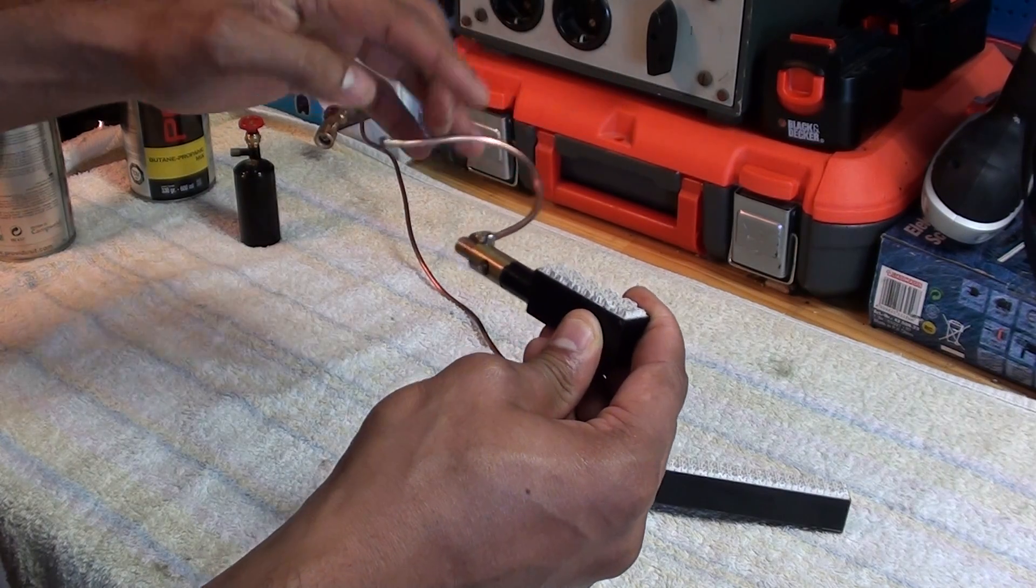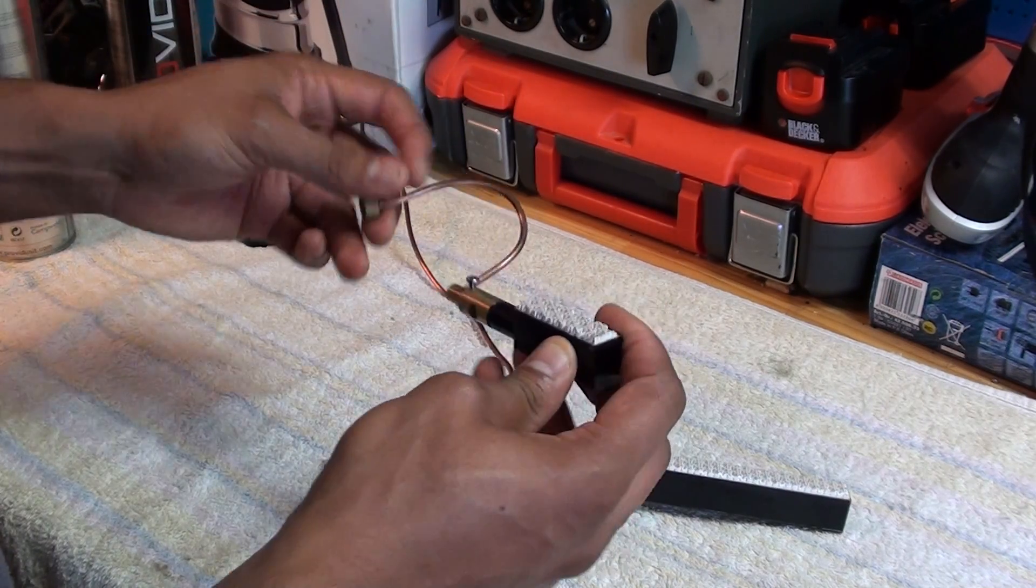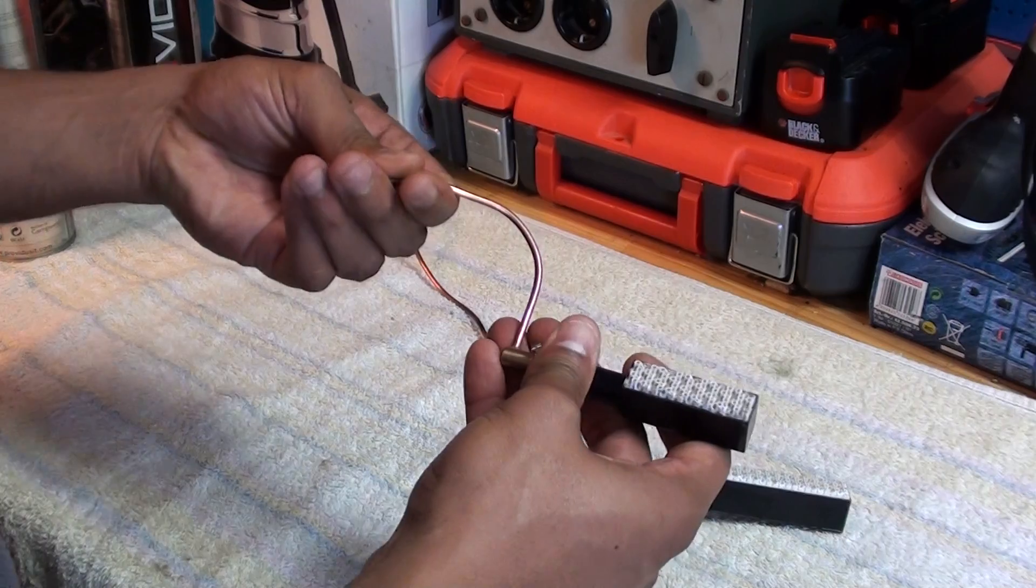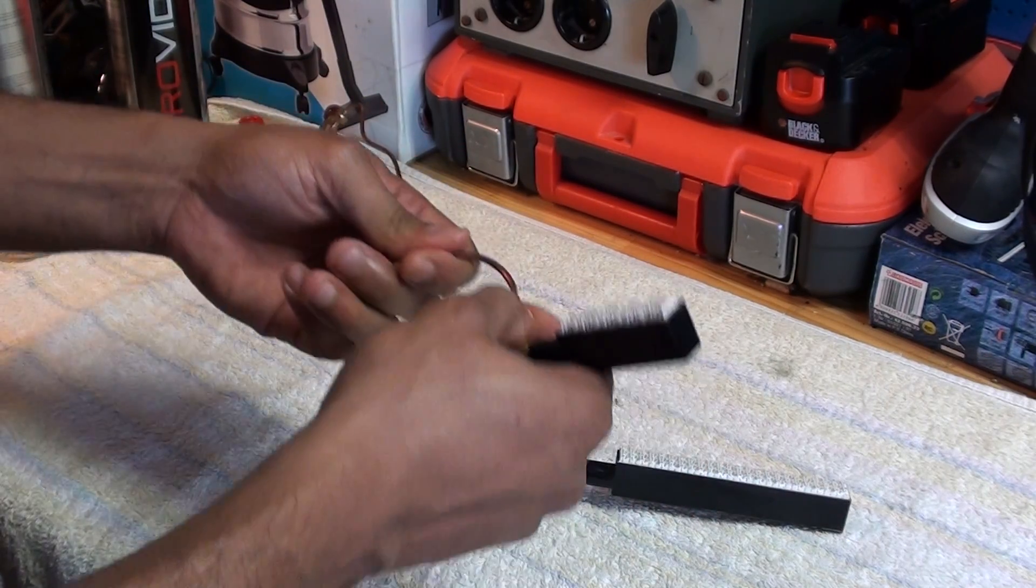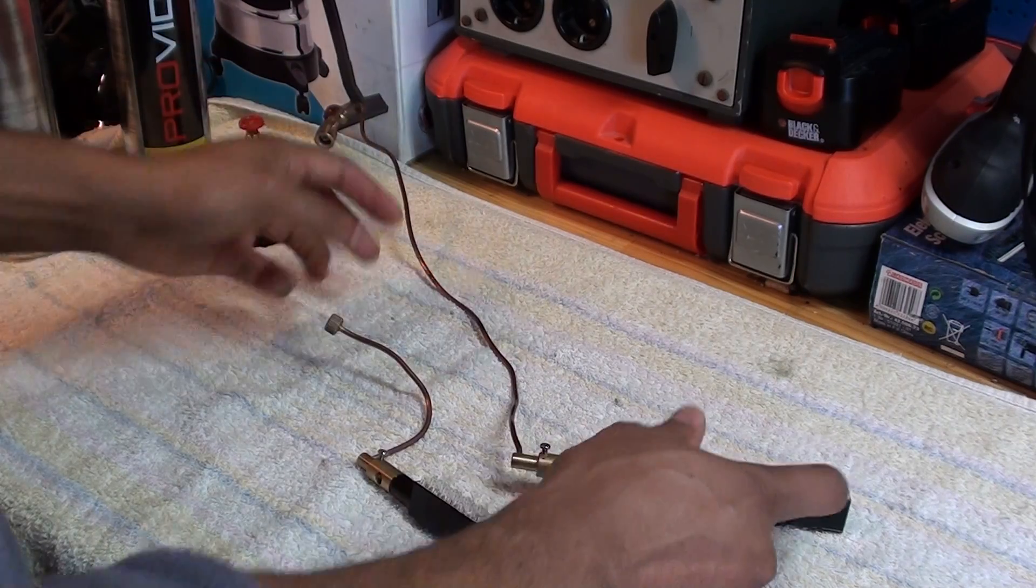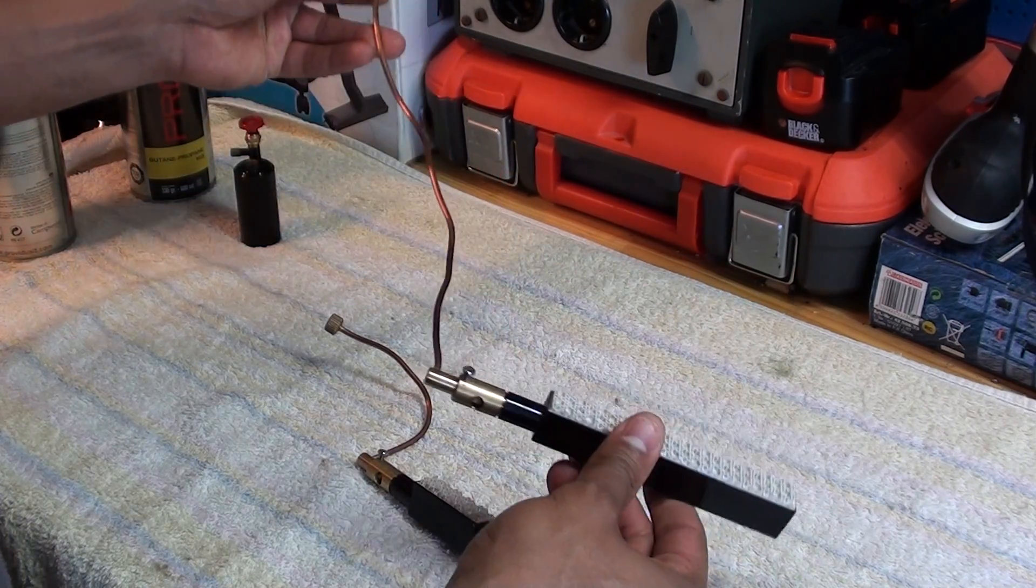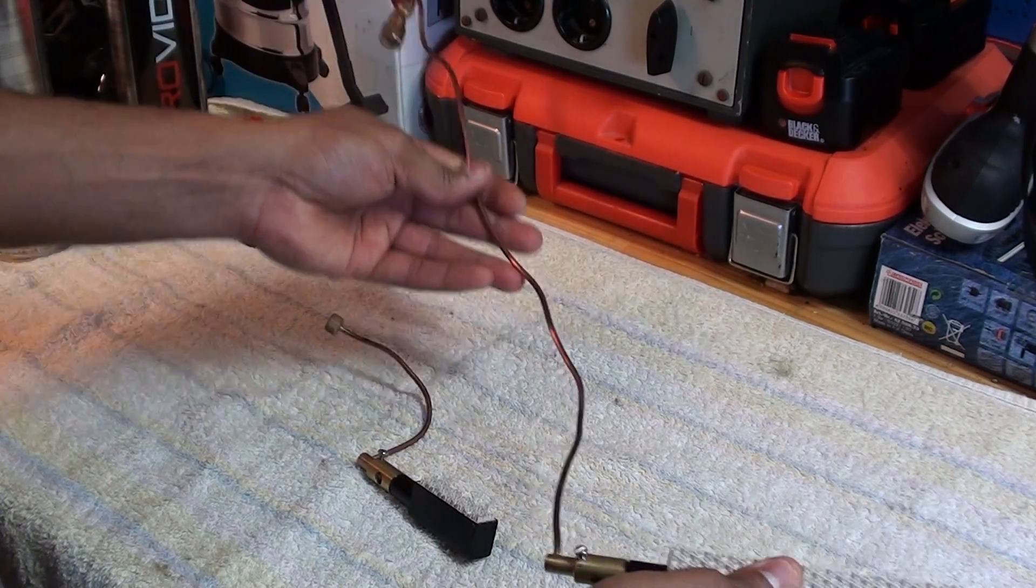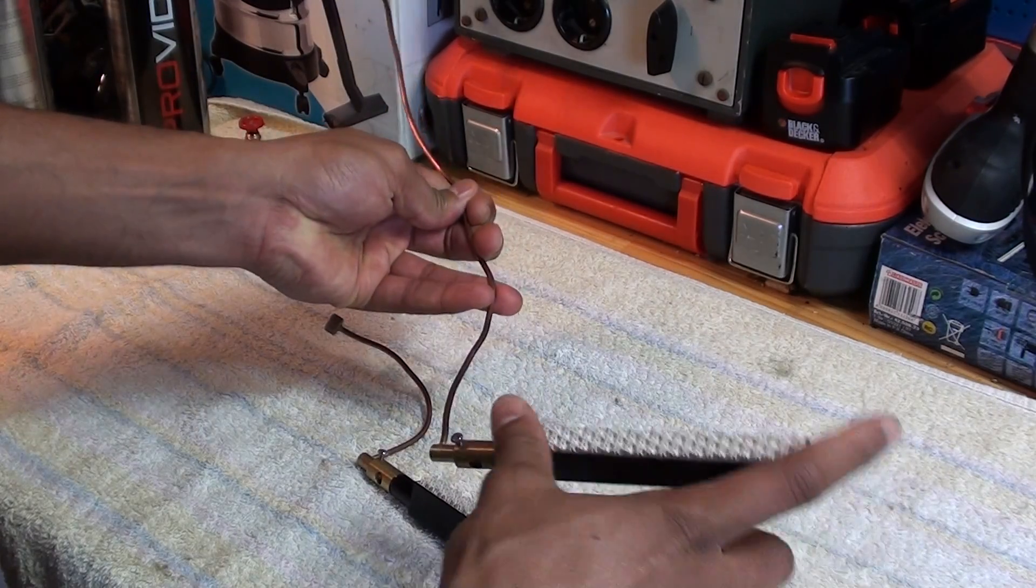You have the copper tube which can be bent into any position that suits your engine, and this is exactly the same thing only on a larger scale. That's a longer copper tube and a longer burner.